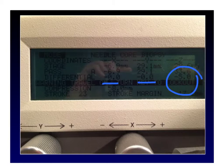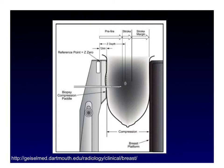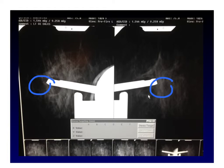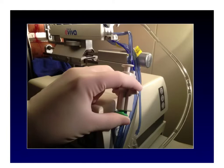Our biopsy device is now in the pre-fire position, five millimeters proximal to the target lesion. We take pre-fire stereo pair images, and we see the calcifications are largely equidistant from the needle tip. There are times when the target may appear further away on one view, which may require repositioning — troubleshooting for that is beyond the scope of this video. We then deploy the biopsy device by pushing the green button. The distance the needle travels after firing is called the stroke. Once fired, the target will be in the center of the well, and the distance from the needle in the post-fire position to the back plate is called the stroke margin.